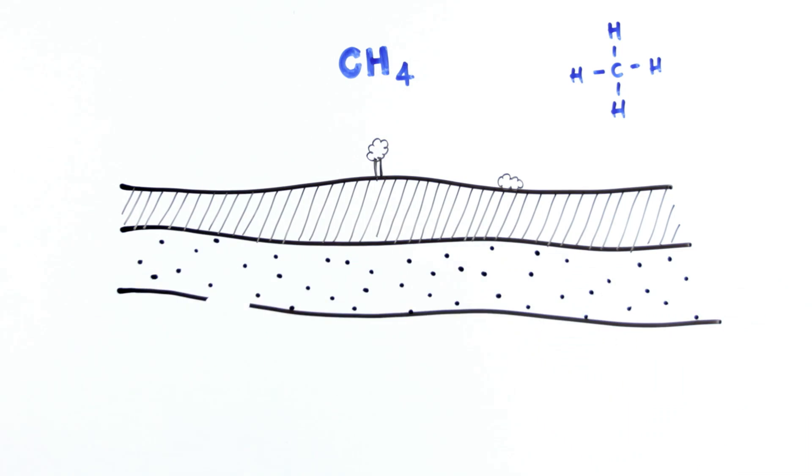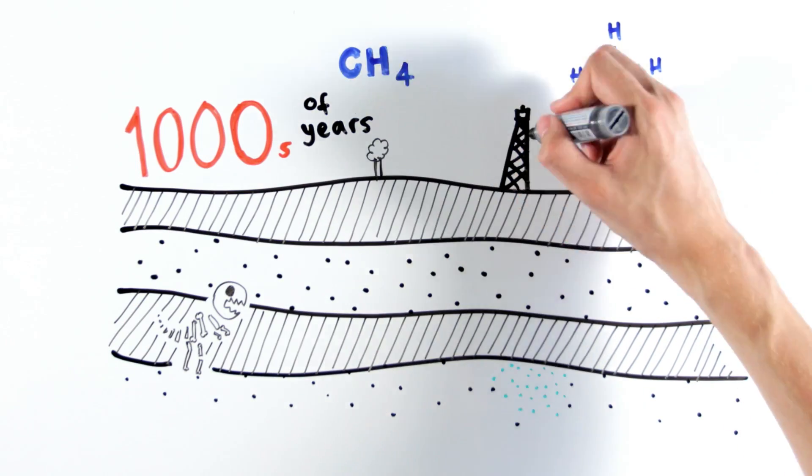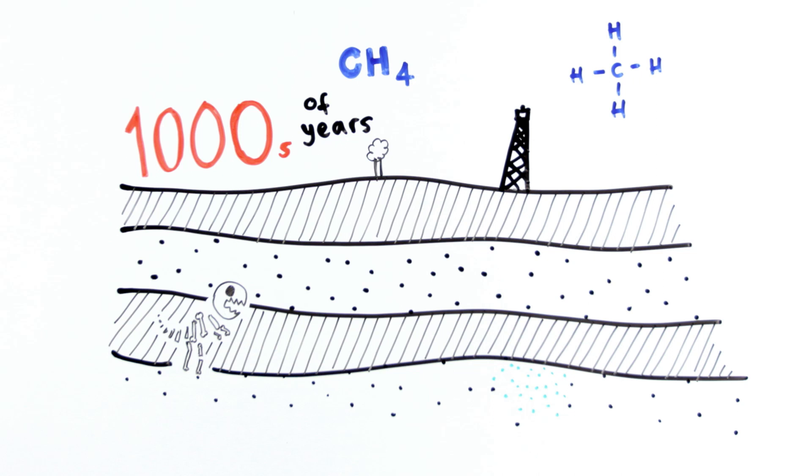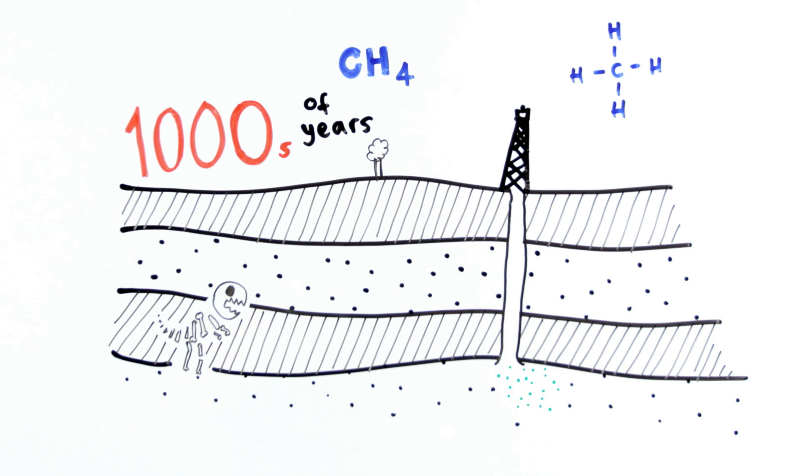Like all other fossil fuels, natural gas is formed underground over thousands of years. And we use it much quicker than it can be renewed. It's extracted by drilling under the Earth's surface into gas fields.